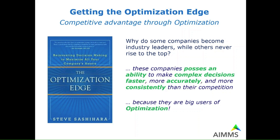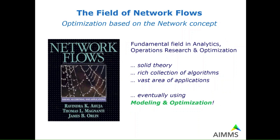AIMMS is mainly active in the optimization area where, of course, by using optimization many companies can get a competitive edge compared with companies who do not use optimization. I would like to go a little bit deeper into the area of network flows, which is an area with solid theory, rich collections of algorithms, and a vast collection of applications. Network models use modeling and optimization, and this is where AIMMS as a modeling system and solution platform can play a key role.